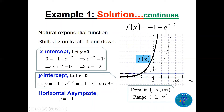To find the x-intercept, let y = 0: e^(x+2) = 1, which requires the exponent to be 0, so x = −2. For the y-intercept, let x = 0: we get −1 + e². If you have a calculator, that's approximately 6.38. The domain is (−∞, +∞), and the range is now shifted to (−1, +∞) due to the downward shift.